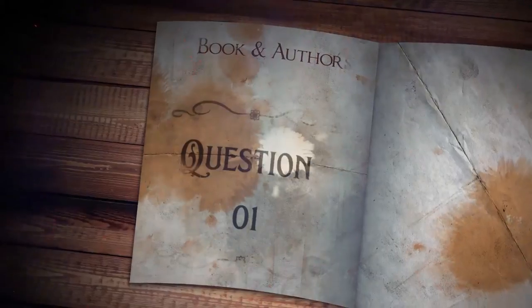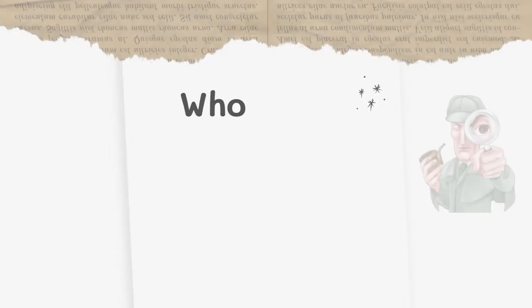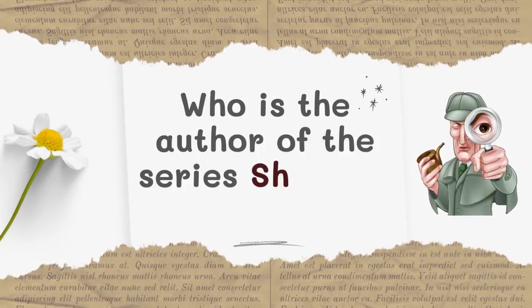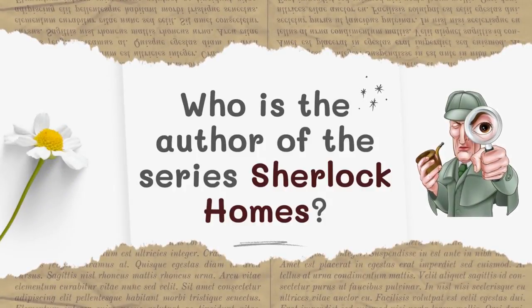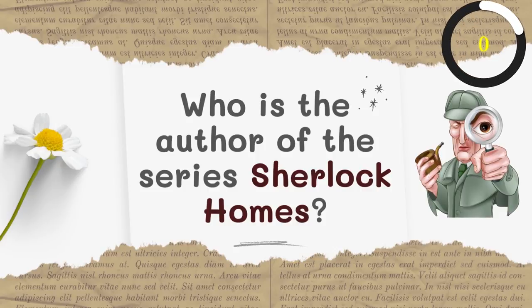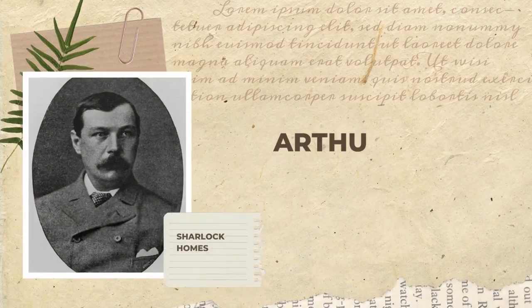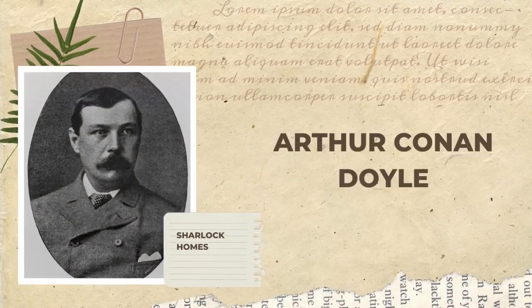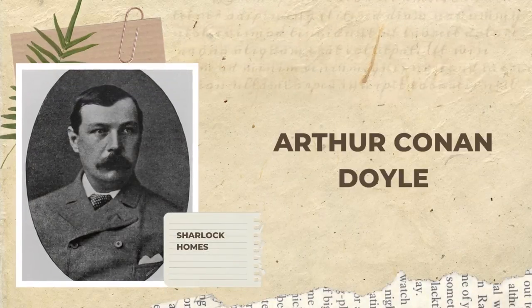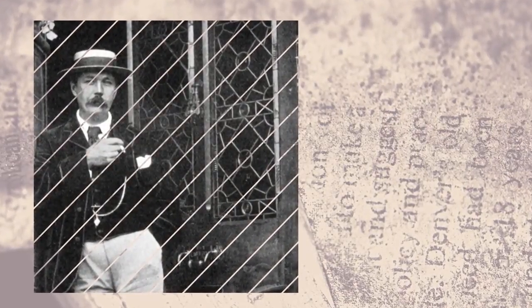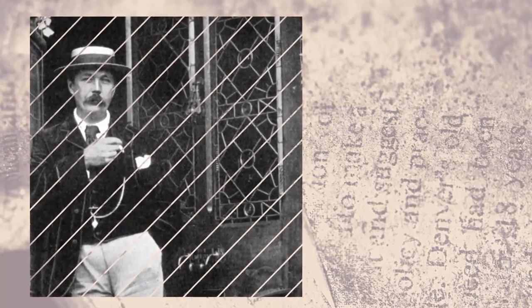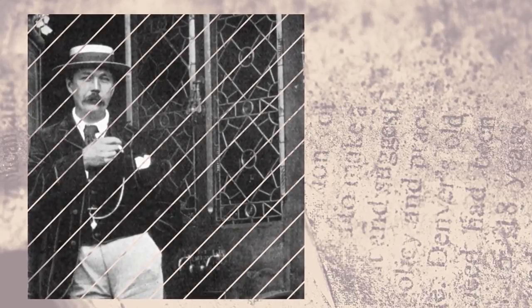Mission number one: who is the author of the series Sherlock Holmes? The answer is Arthur Conan Doyle. On May 22nd, 1859, Arthur Conan Doyle was born to an affluent, strict Irish Catholic family in Edinburgh, Scotland.